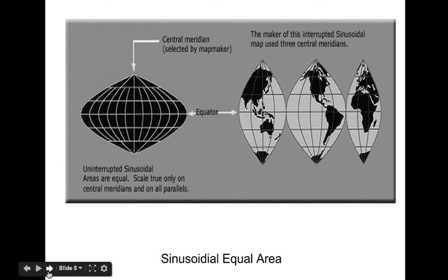Sinusoidal equal area map. No, it's not sinusitis, it's sinusoidal. To create this map, cartographers peeled back the surface of the globe and laid it flat on a rectangular surface, then traced the shape of the continents.